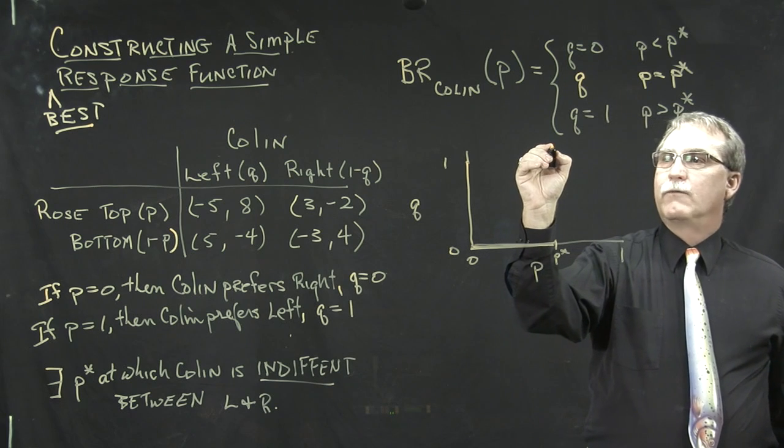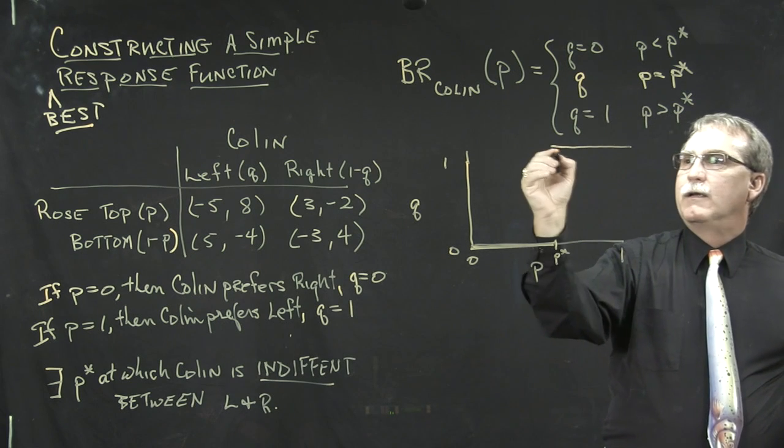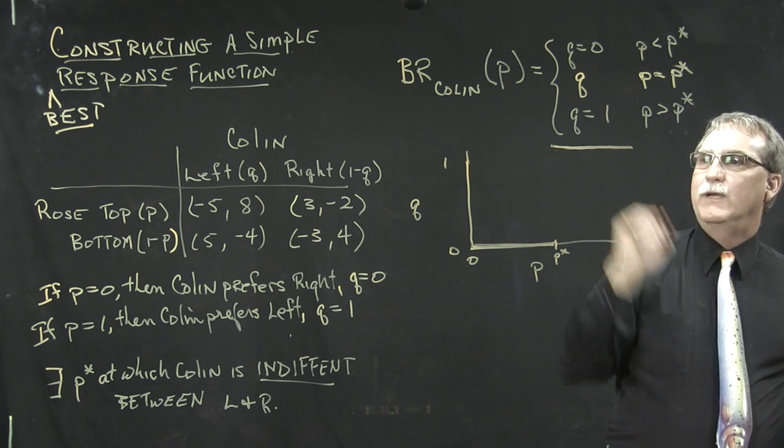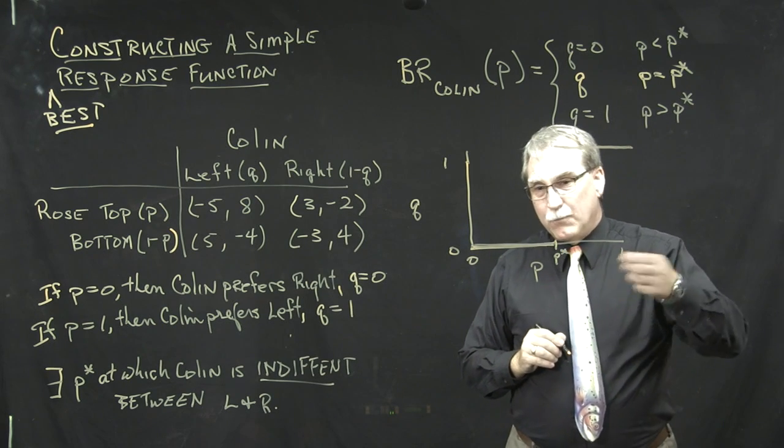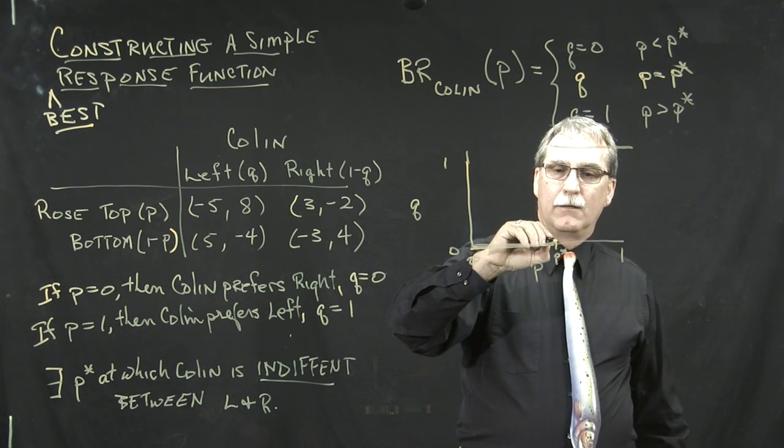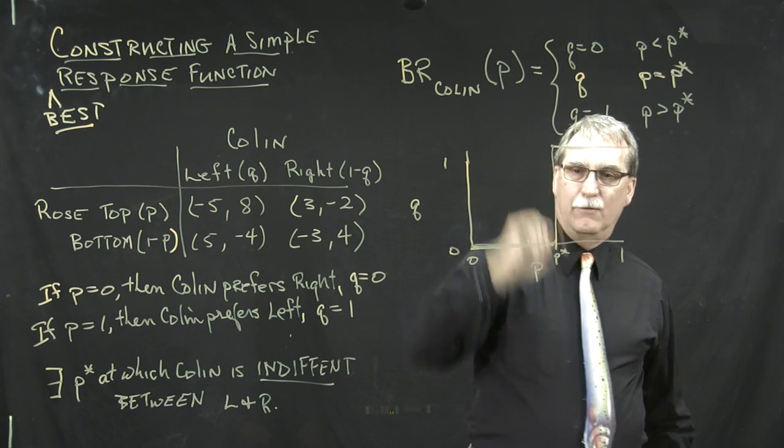Over here, for P greater than P star, it's the constant function Q equal to 1. And then when we're at P star, we can have any value of Q.